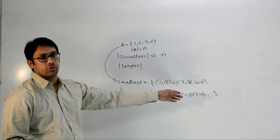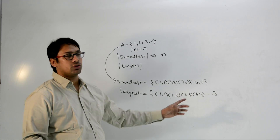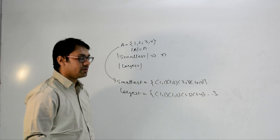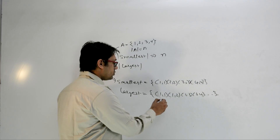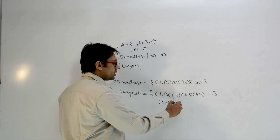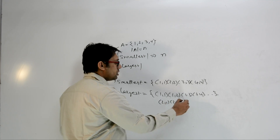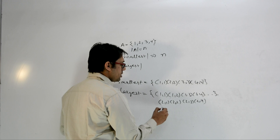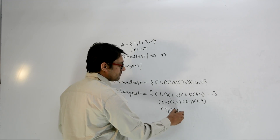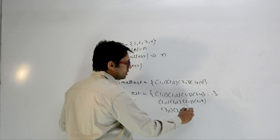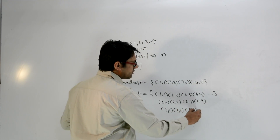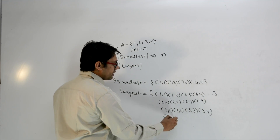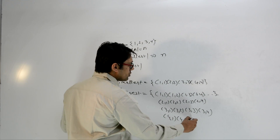The cross product A×A contains: (1,1), (1,2), (1,3), (1,4), (2,1), (2,2), (2,3), (2,4), (3,1), (3,2), (3,3), (3,4), (4,1), (4,2), (4,3), (4,4). So the largest reflexive relation contains all 16 elements of A×A.